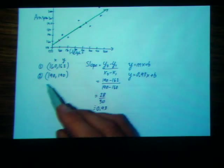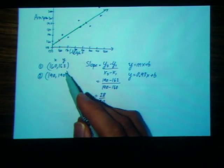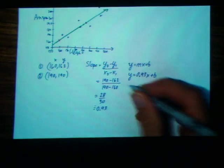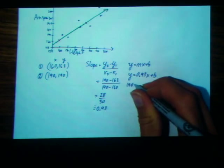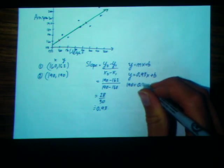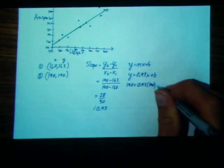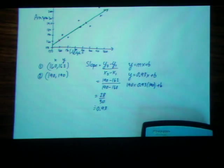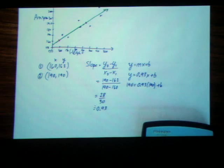Well, all we need is one of the other points. We can pick either of these two points. We'll get the same answer. So I'll pick 0.2, why not? And I get 190 equals 0.93 times 190 plus b.